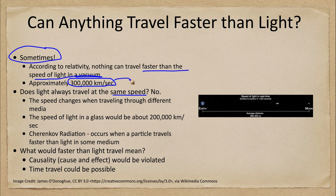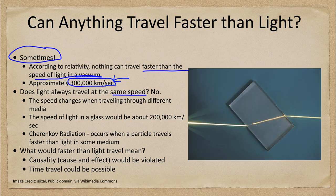However, what we also know is that light does not always travel at the same speed. Light does not always travel at 300,000 kilometers per second — that is the speed of light in a vacuum. The speed will change when you're traveling through different types of media. So if you're traveling through glass or air, the speed will change, and we see that here as the light goes into a block of glass and then back out again.